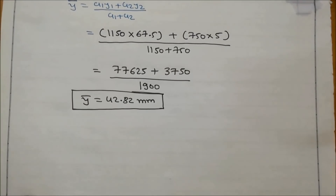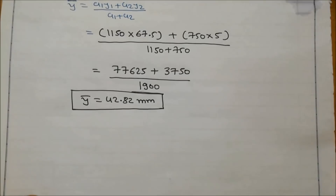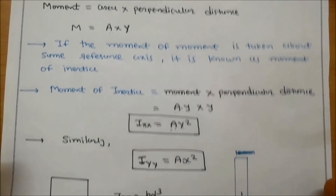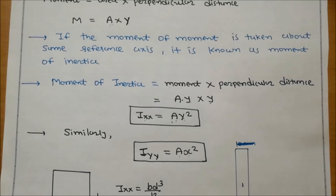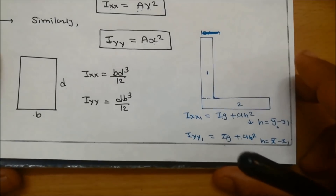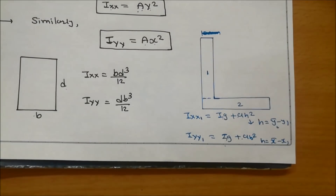Now we find the moment of inertia. We know that Ixx equals Ay square and Iyy equals Ax square. When you consider the whole section as a combination of parts, use the parallel axis theorem.